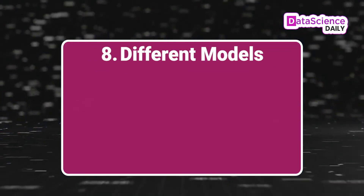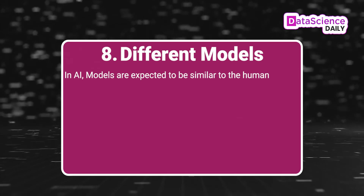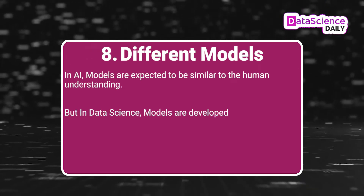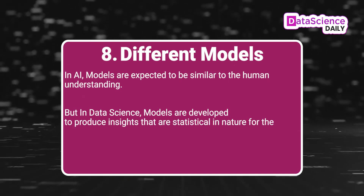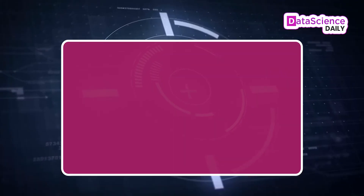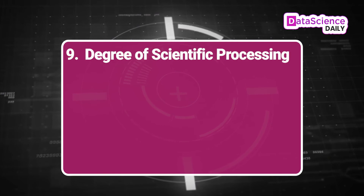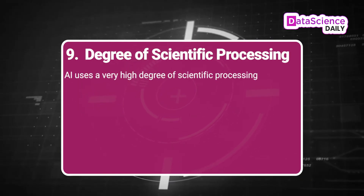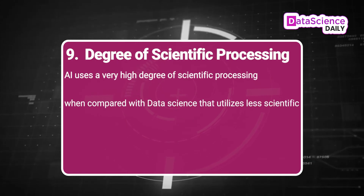8. DIFFERENT MODELS — In AI, models are expected to be similar to human understanding. But in data science, models are developed to produce insights that are statistical in nature for the purpose of decision making. 9. DEGREE — AI uses a very high degree of scientific processing when compared with data science, which utilizes less scientific processing.